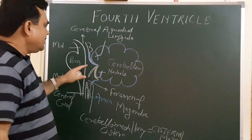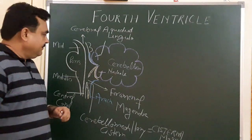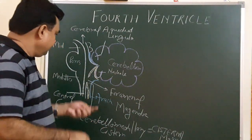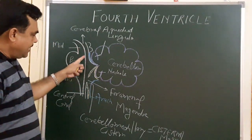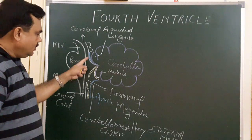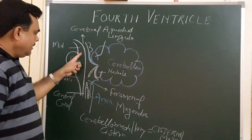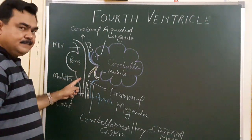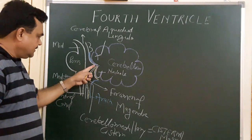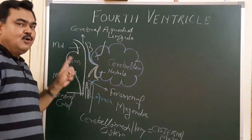These are the communications of the fourth ventricle. As you can see in this diagram, this is the floor of the fourth ventricle and this is the roof. The floor is formed by the pons and medulla oblongata, and the roof is formed by these structures. It also has a lateral boundary.